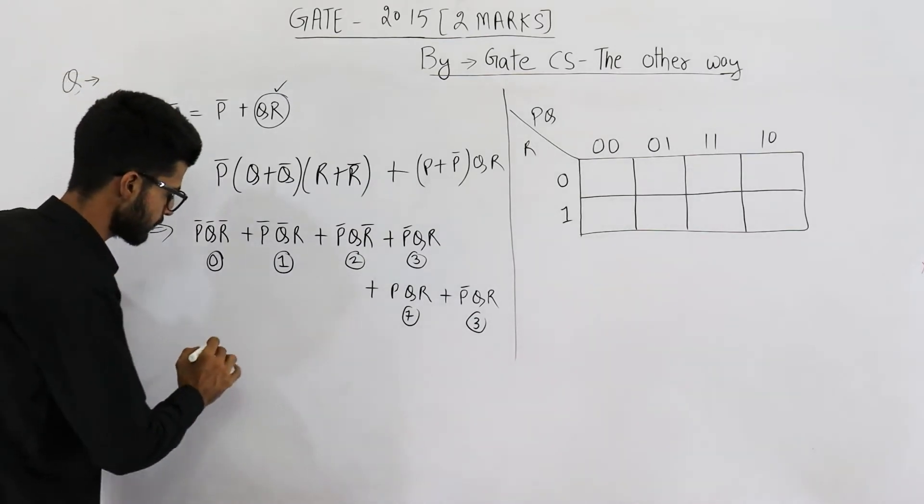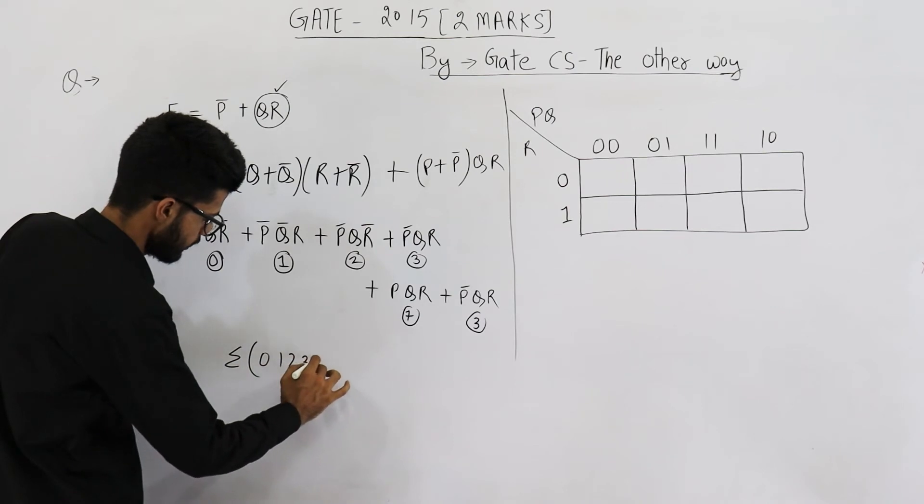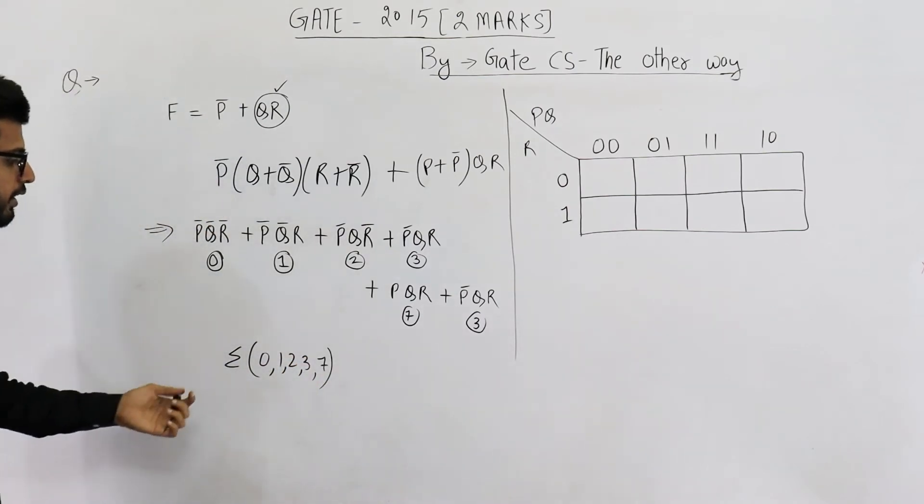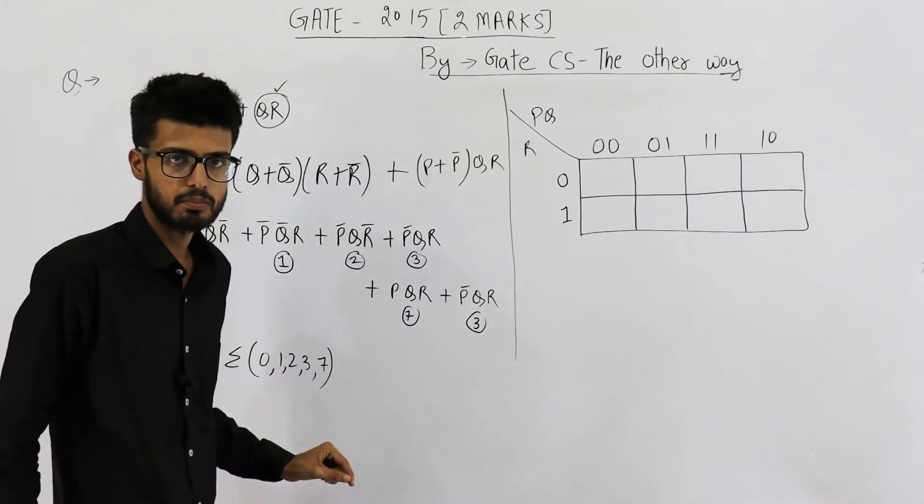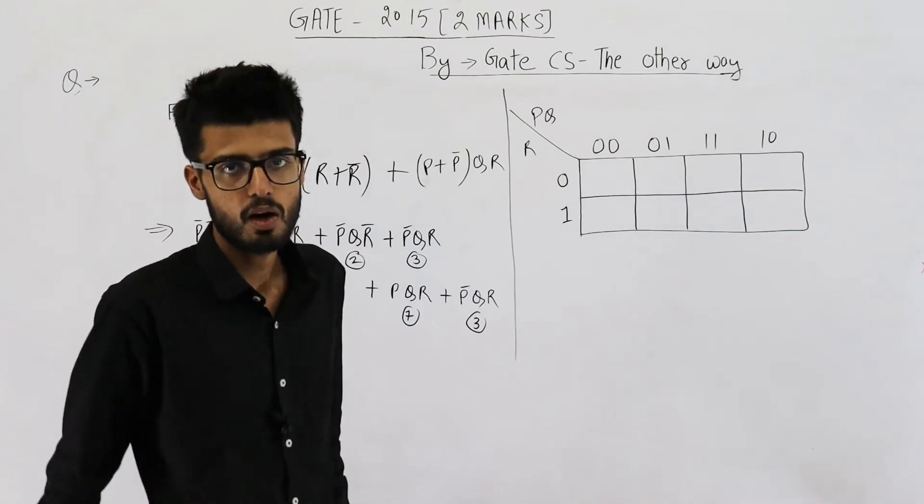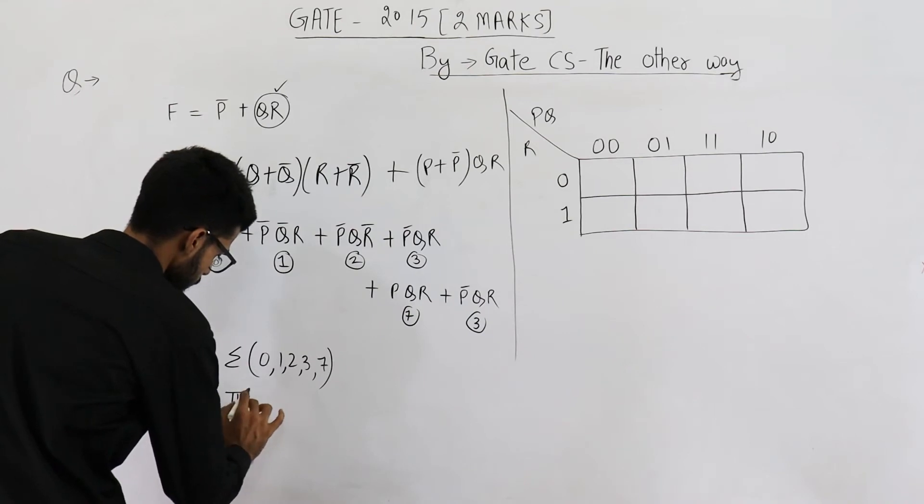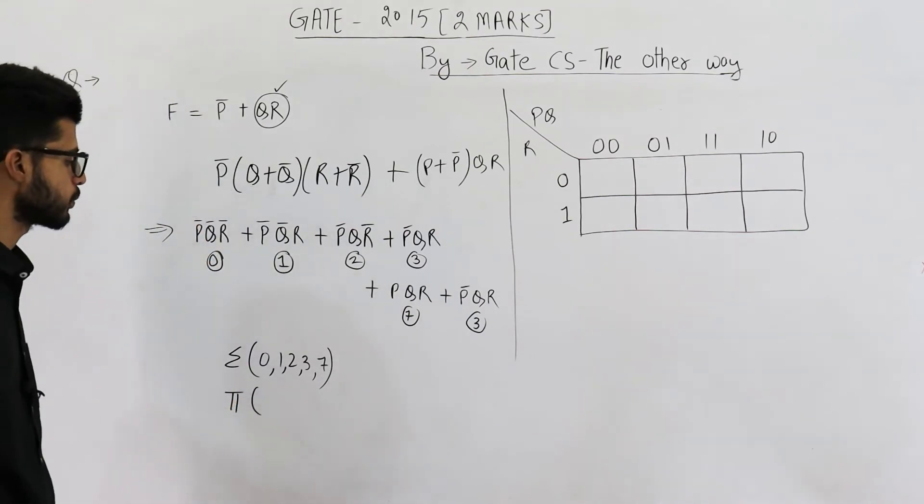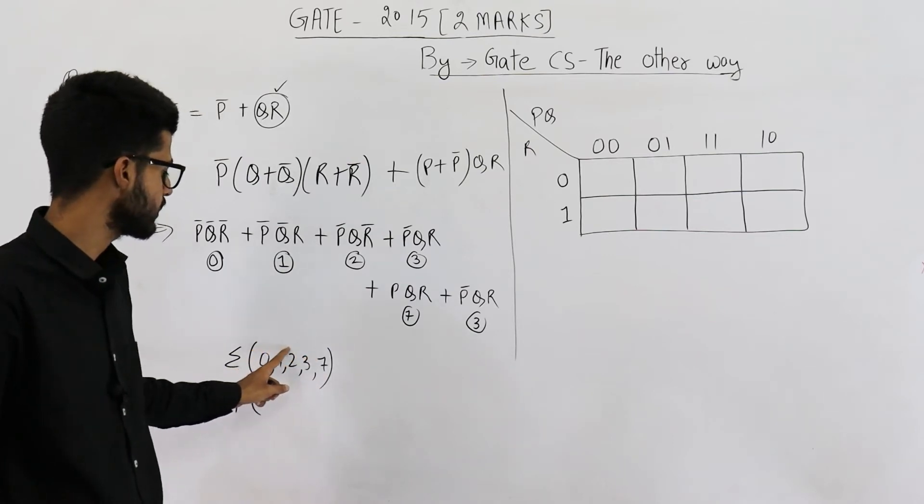Anyways, we got the minterms, that means Σ(0, 1, 2, 3, 7), this is our function if we consider the minterms. And if we want to specify the maxterms, that means all the inputs where the function will output 0, so all the inputs where the function will output 0 will be the inputs except for these 5.